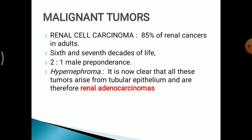Coming to the malignant tumours: renal cell carcinoma is the most common tumour of renal origin, comprising 85% of renal cancers in adults. It is seen in the 6th and 7th decades of life with male preponderance. It was earlier known as hypernephroma, but now it is clear that all these tumours arise from the tubular epithelium and are therefore called renal adenocarcinoma.